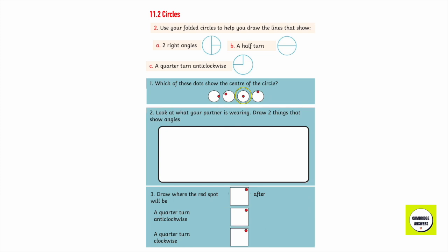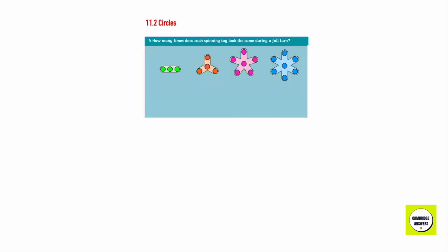Which of these dots show the center of the circle? Look at what your partner is drawing. Draw two things that show angles. Draw where the red spot would be after a quarter turn anti-clockwise, and a quarter turn clockwise. How many times does each spinning toy look the same during a full turn?